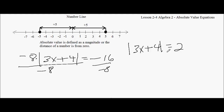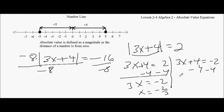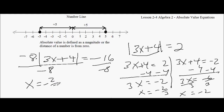Now I do the splitting. The expression inside has to equal 2 or negative 2. For 3x plus 4 equals 2: subtract 4 from both sides, get 3x equals negative 2, so x equals negative 2 thirds. For 3x plus 4 equals negative 2: subtract 4, get 3x equals negative 6, divide by 3, and x equals negative 2. So x equals negative 2 thirds and x equals negative 2.